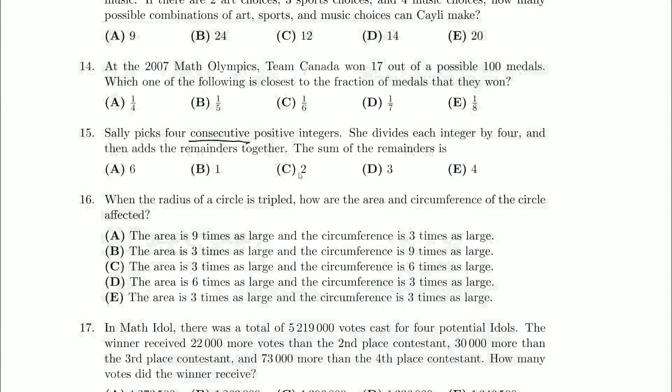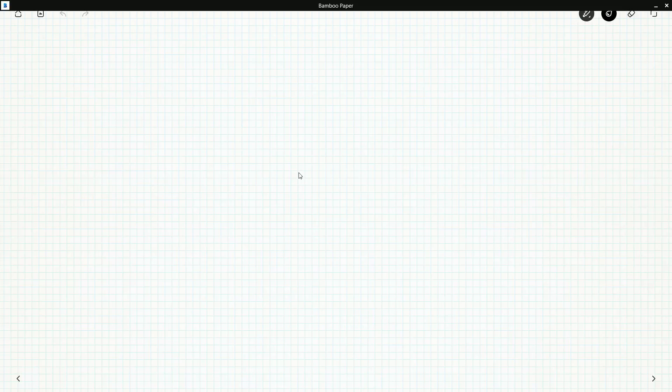Well, if I have four consecutive positive integers, these four numbers we could say probably look something like n+1, n+2, n+3, n+4. We could say something like that, but we could say something a little bit better.